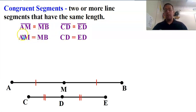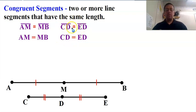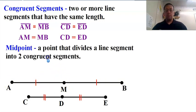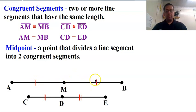So the length — no bar above it — the length of AM equals the length of MB. This is a very nitpicky thing, but shapes are congruent, while the values — the value of its length — is equal to the value of the other length. Values are equal, shapes are congruent. Notice M here splits segment AB into two congruent segments, so what that means is that M is a midpoint — a point that divides a line segment into two congruent segments.